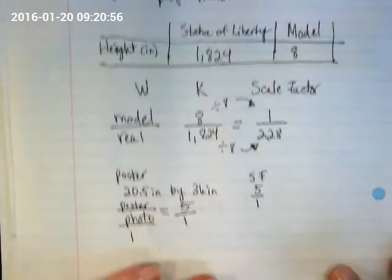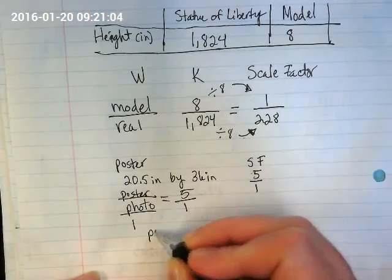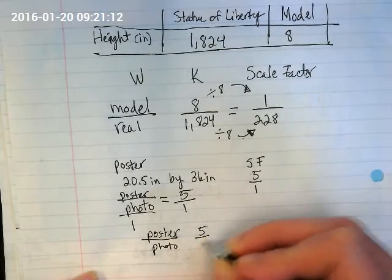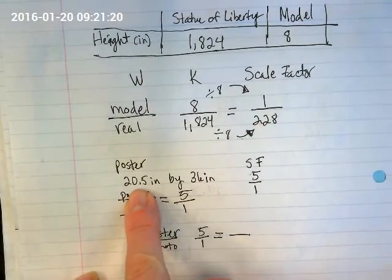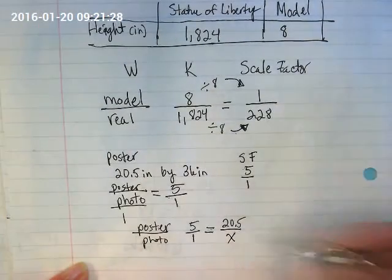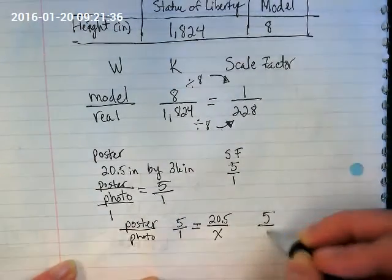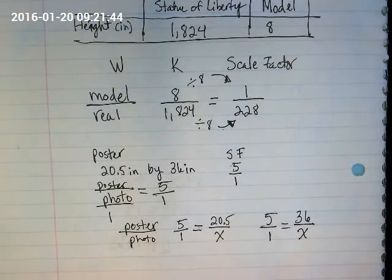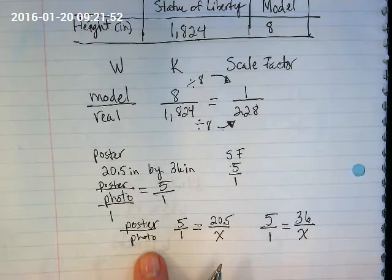And we want to try to find the size of the original photograph. So we're going to have to set up two proportions to do that. We have the poster. We have a ratio or scale factor of 5 to 1 is equal to. We need to use one of these two measurements that it was enlarged to. And here's where we get our unknown. And we're going to do the same thing with the other measurement. We're going to set up a second proportion. 5 to 1 equals the second measurement we know over the unknown. And then we would be able to cross multiply and divide and come up with what was the size of the photo.